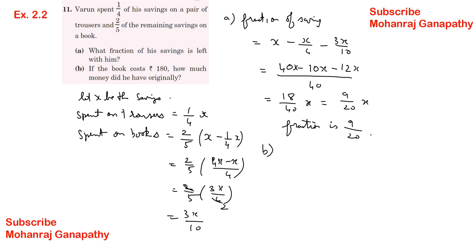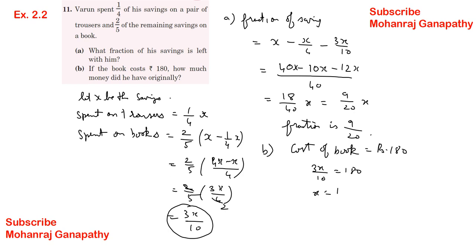Part b: If the cost of books is Rs. 180, find original savings. Spent on books equals 3x/10 equals 180. So x equals 180 times 10/3. Cancel: 60 times 10 is 600. Therefore x equals Rs. 600. Originally he had Rs. 600.